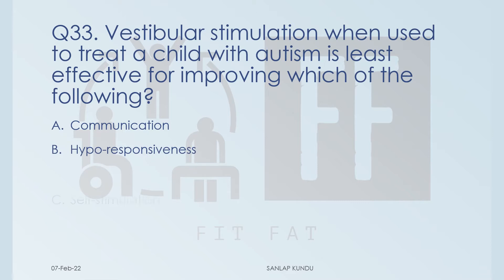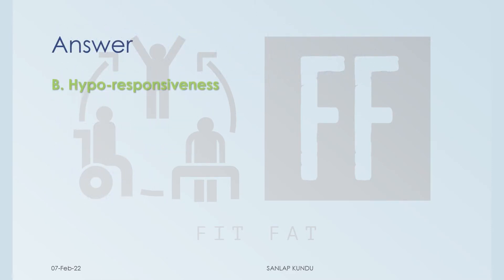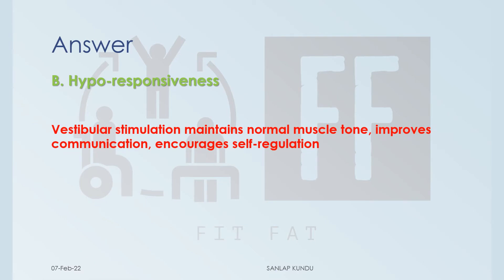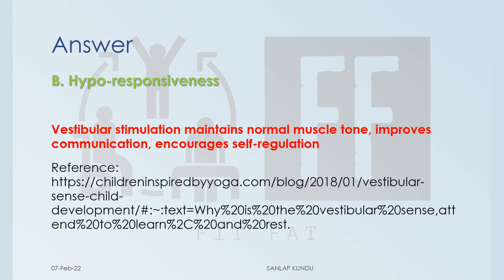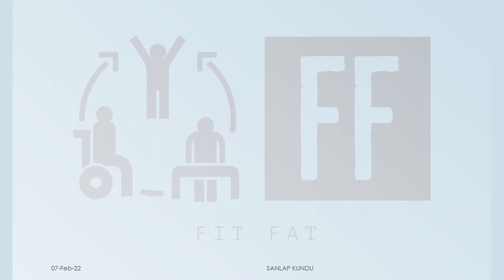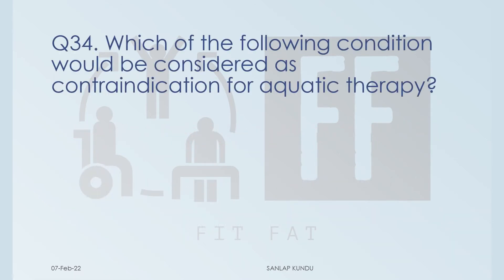Question 33 on vestibular stimulation: the correct answer is option B, hyporesponsiveness. Vestibular stimulation maintains muscle tone, improves communication, and encourages self-regulation — but not hyporesponsiveness. For reference, you can follow the link given in the description box below.